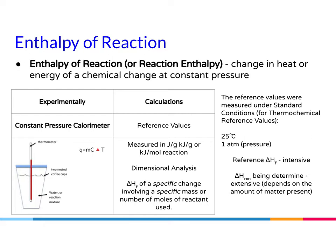We can find enthalpy experimentally using a coffee cup calorimeter with Q = mcΔT, where Q of the system equals Q of the surroundings. Depending on the reaction, the system or surroundings is exothermic and the other is endothermic. Or we can do it through calculations using reference values — chemists have performed these experiments and given us measured values in joules per gram, kilojoules per gram, or kilojoules per mole reaction. You use those measured values with dimensional analysis. The delta H of formation for a specific change involving a specific mass or number of moles of reactant is used.